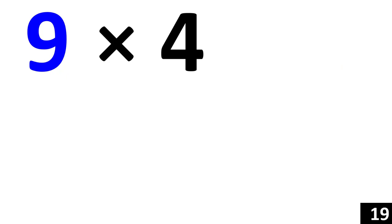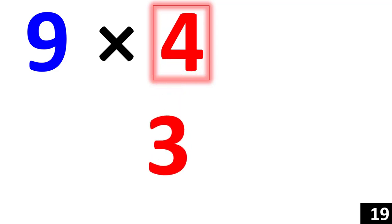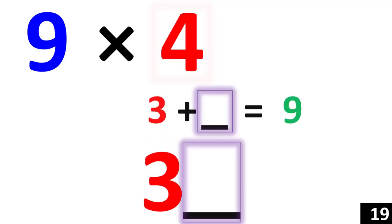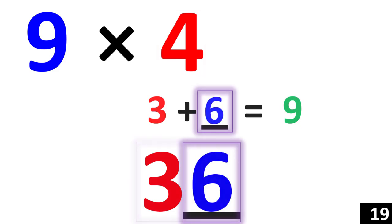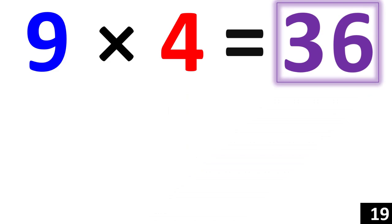9 times 4. Starting from the number 4, 1 less than 4 is 3. So, 3 is your first number. 3 plus what number would give us 9? 6. Therefore, 36 is your answer.